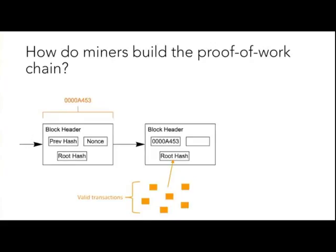So if you have a hash of the previous block header, you know that that hash is legitimate — you can't fake that hash. The way that the proof-of-work chain is built is that inside this block header, you have the hash of the previous transaction, you have a nonce — which is just a random variable — and you have the root hash, which is all of the valid transactions.